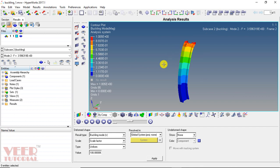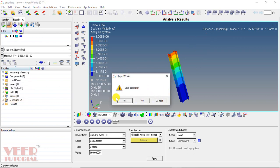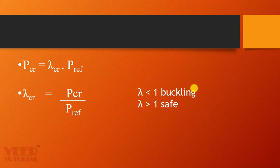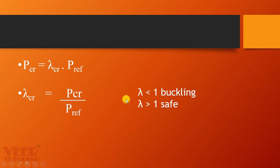It is up to the designer which mode shape they are going to design this column for. As discussed earlier, critical load is equal to lambda critical multiplied by p reference. So lambda equals p critical divided by p reference. If lambda is less than 1, there will be buckling; if it is greater than 1, it is a safe structure. If we set p reference equal to 1 Newton, then lambda directly gives us the critical load p critical. When designing a column, we apply a reference force of 1 Newton and calculate the value of lambda.